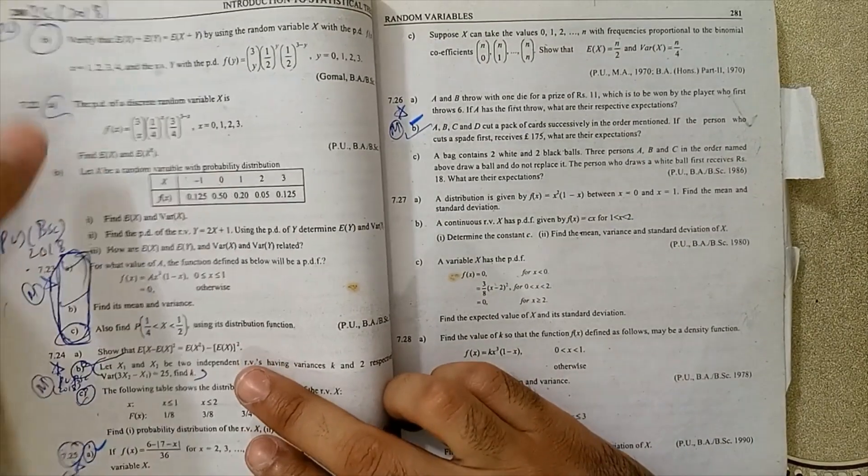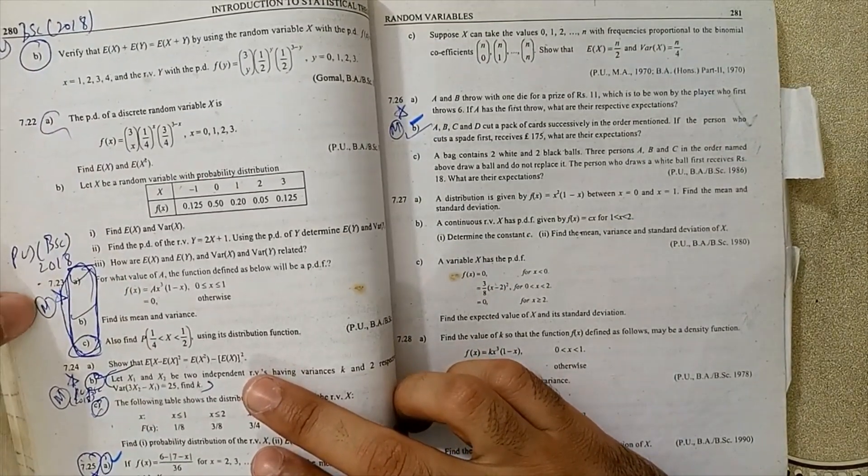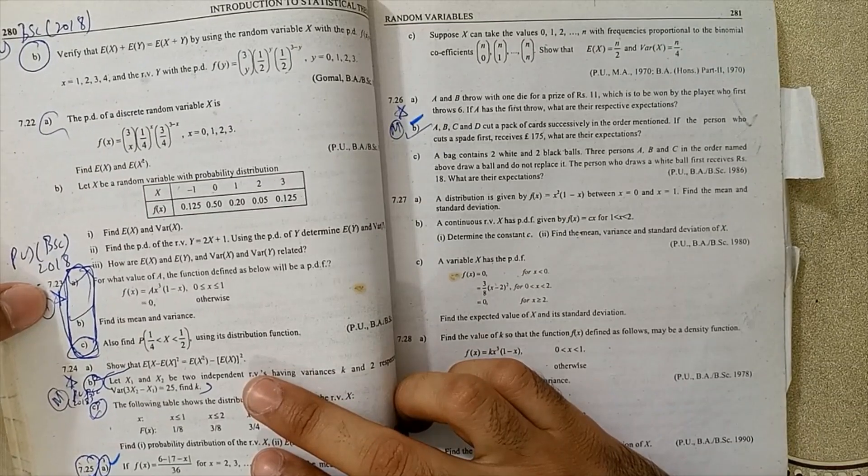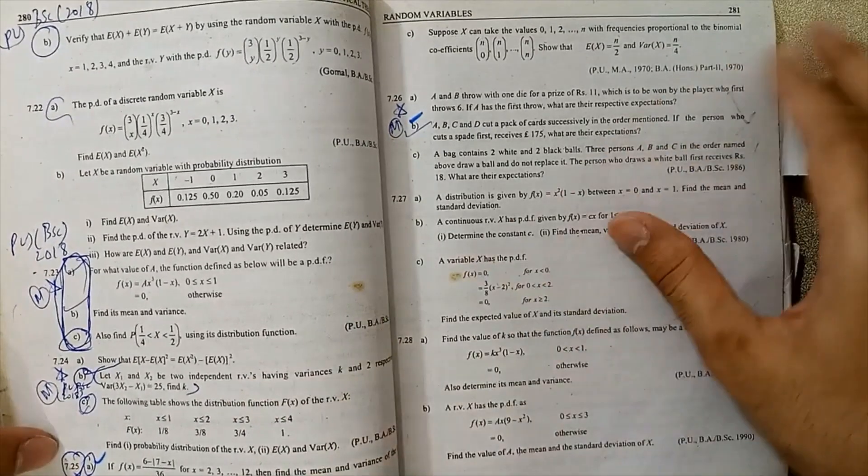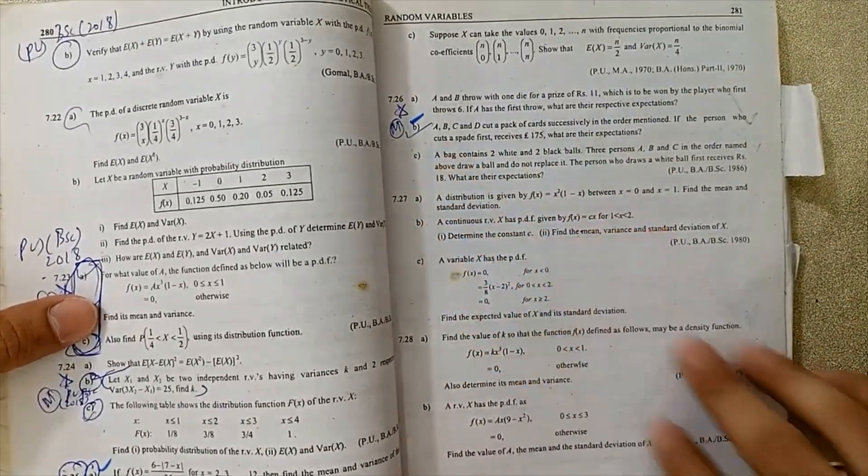Page 280 part B is very important. Next, 7.23 ABC parts, 7.24 ABC parts, 7.25, and 7.26 part B is very important.